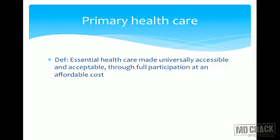Primary health care — you are all aware of the definition. It is health care which is essential, made universally accessible and affordable through full participation of the community and at a cost which is affordable for the country to sustain. The whole definition is very big, but the important components are: essential health care made universally accessible and acceptable through full participation of the community, and at a cost which the country and society can afford at each stage of their development.